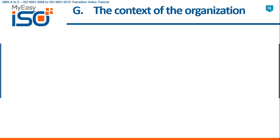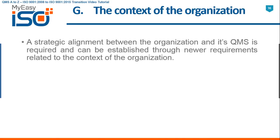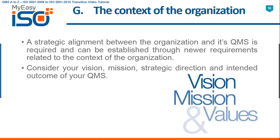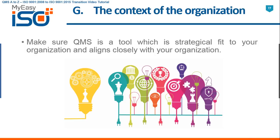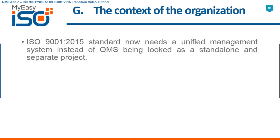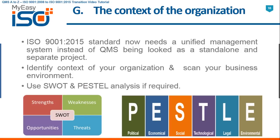G. The Context of the Organization. A strategic alignment between the organization and its QMS is required and can be established through newer requirements related to context of the organization. Consider your vision, mission, strategic direction, and intended outcome of your QMS. Make sure QMS is a tool which is a strategic fit to your organization. ISO 9001 2015 now needs a unified management system instead of QMS being looked at as a standalone and separate project. Identify the context of your organization, scan your business environment, and use SWOT and PESTEL analysis if required.